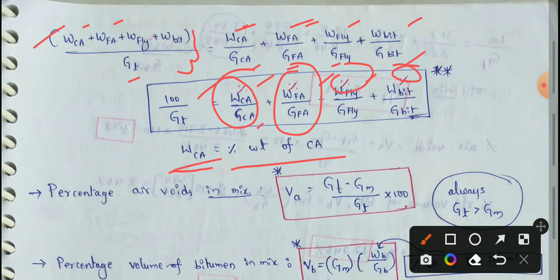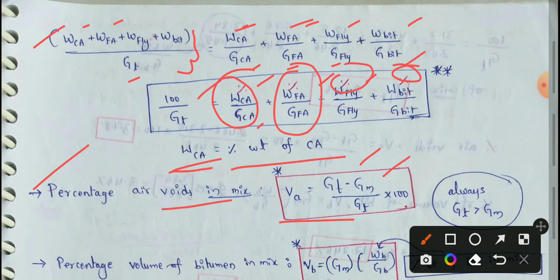Next: air voids in mix (Va), in percentage. Va equals (Gt minus Gm) divided by Gt, multiplied by 100. Here Gt means theoretical density and Gm means mass density or bulk density. Note that Gt is always greater than Gm.